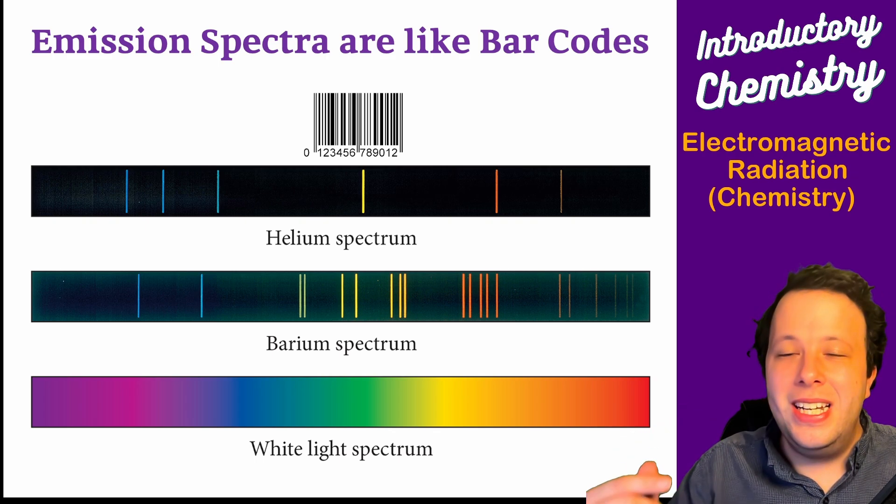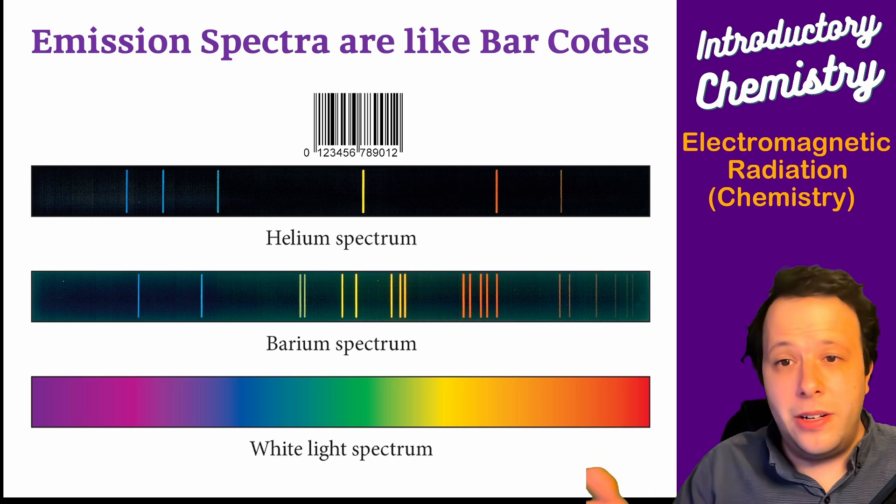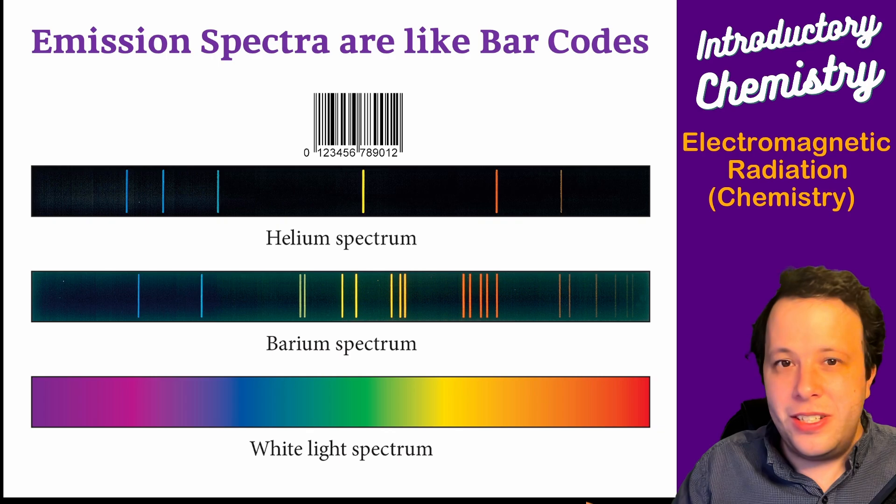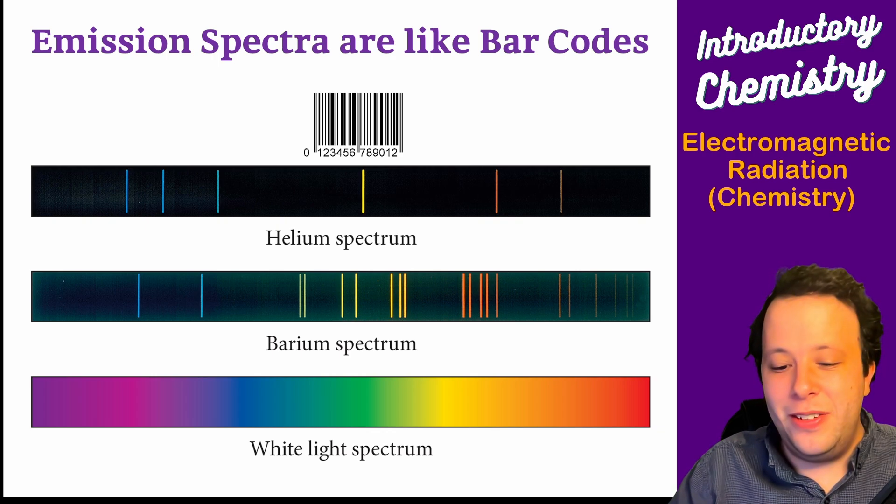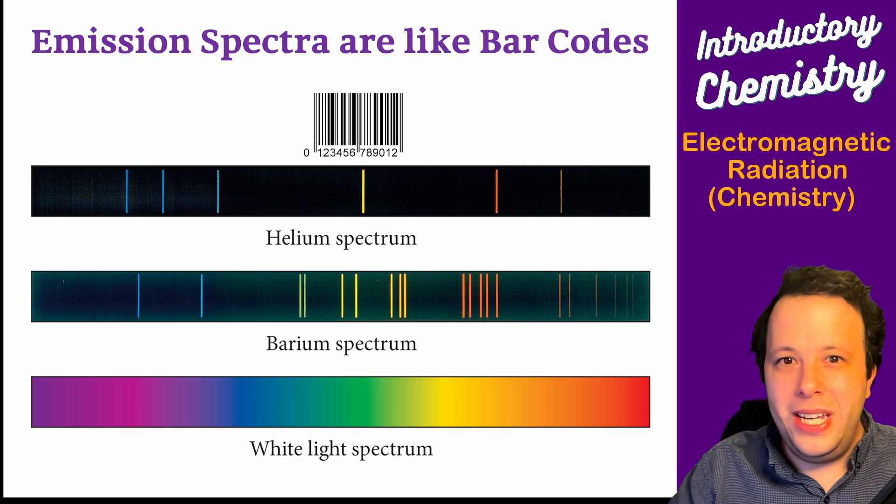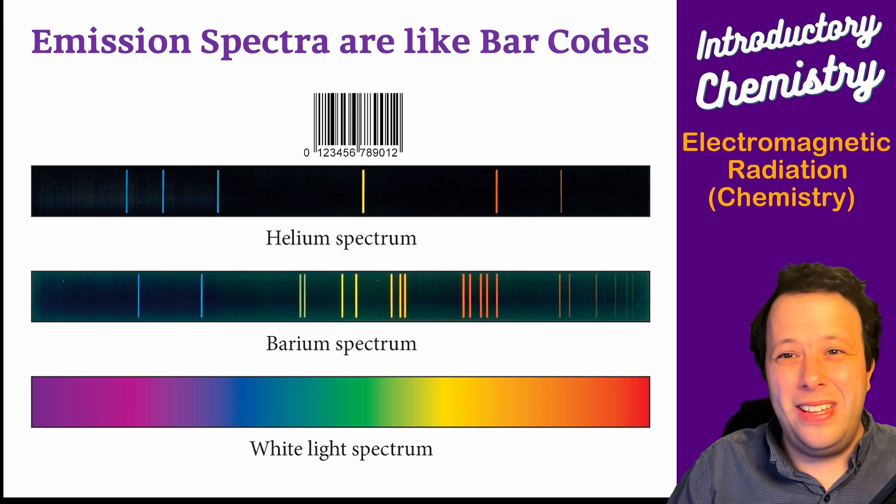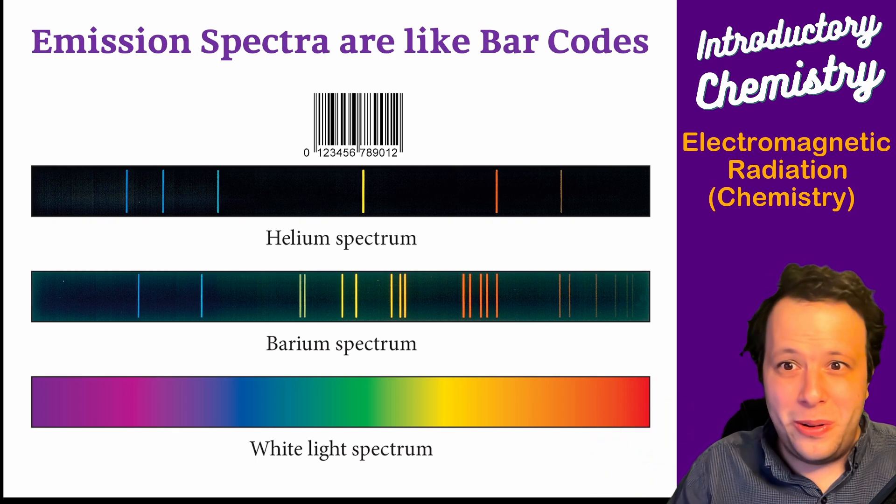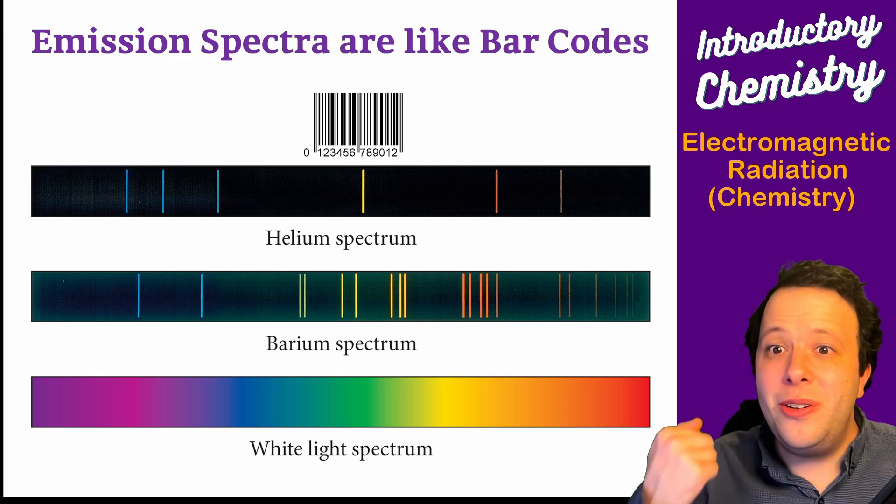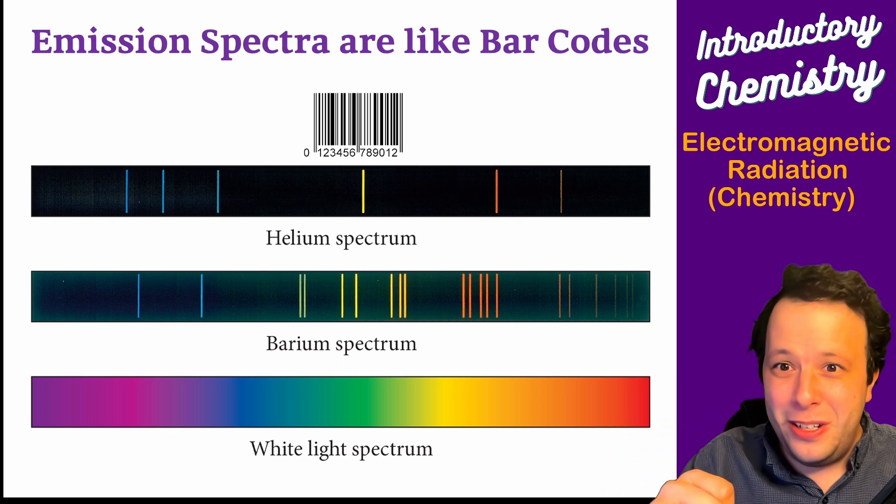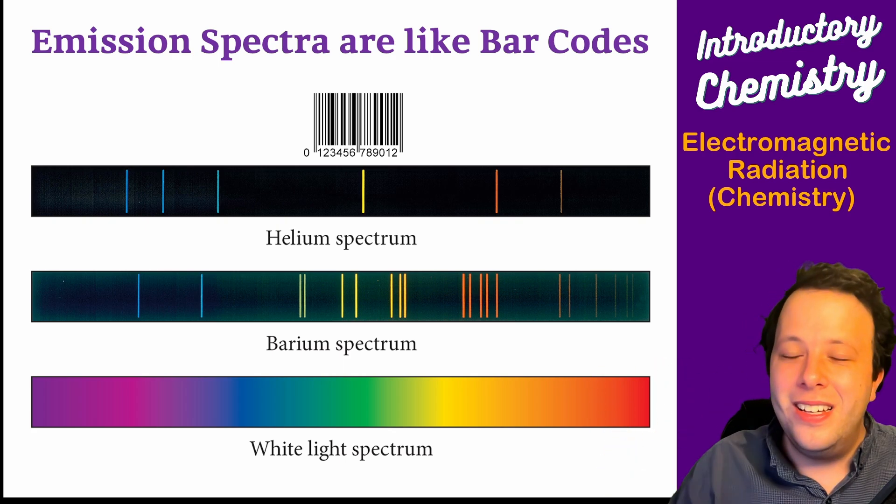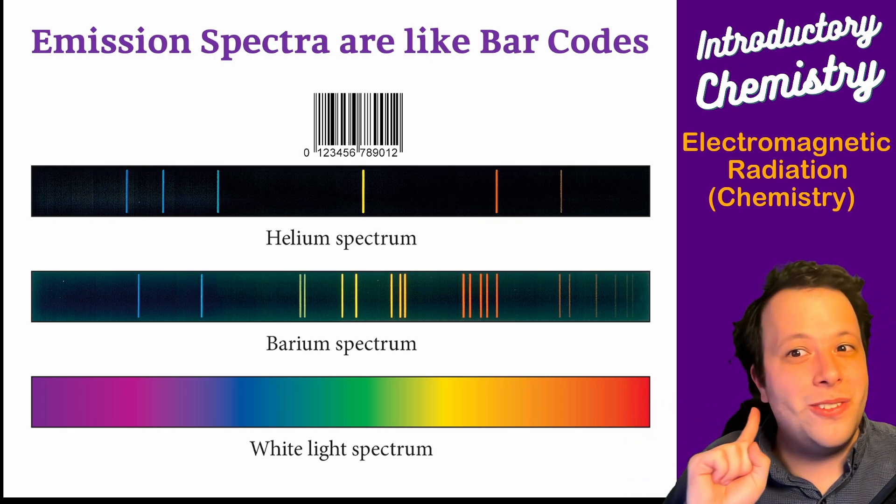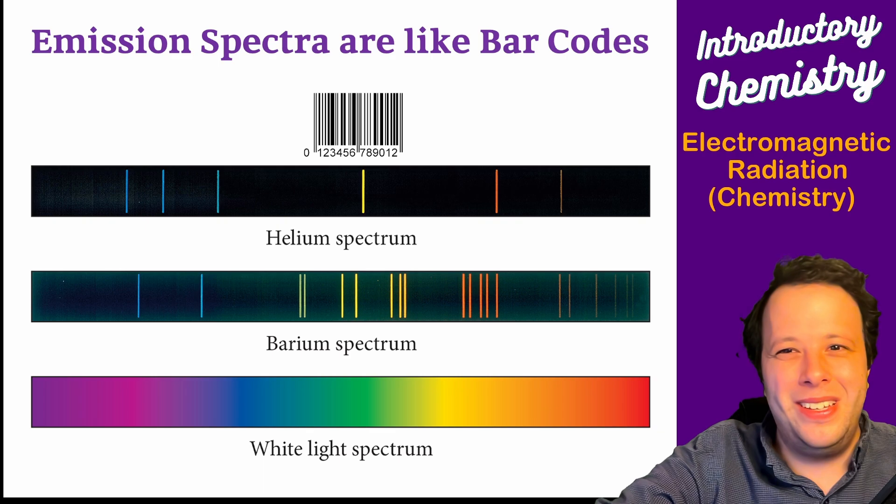Every single one of these things has a unique spectrum, like a bar code at a grocery store or Target. Every single individual item has a bar code with a very specific signature. When this light is being emitted, we can exactly see any of these types of things, which we're going to observe in lab. All these elements are unique with unique properties and unique spectra that can be seen firsthand. You can see the atomic signatures, so atoms exist via spectroscopy.